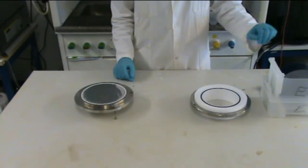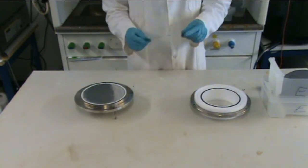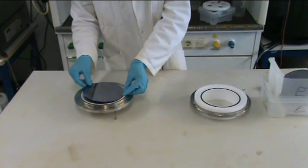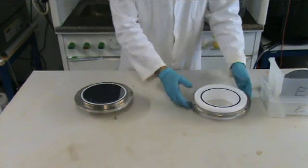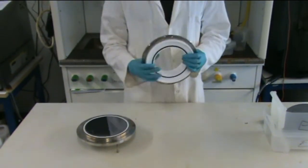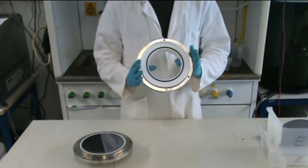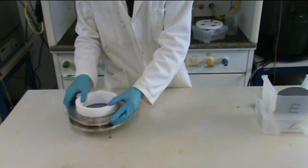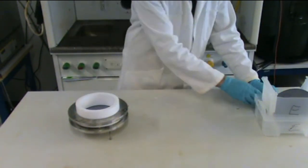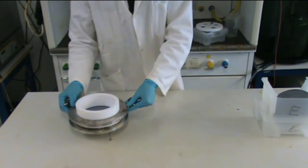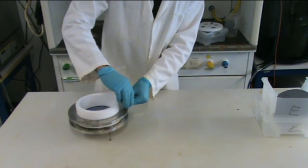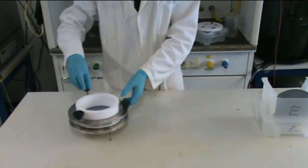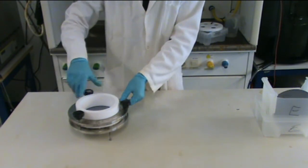To assemble the etching cell I will place the silicon wafer on the metallic contact. Then I will place the teflon tube with o-ring on the top of the silicon wafer. And finally, I will tighten the cell with screws to seal up the etching cell.